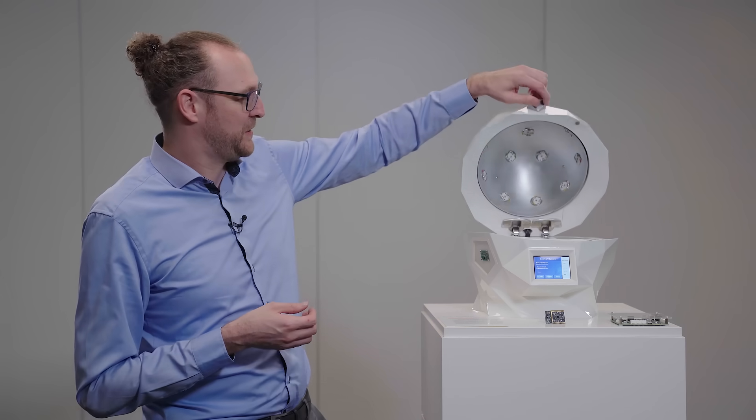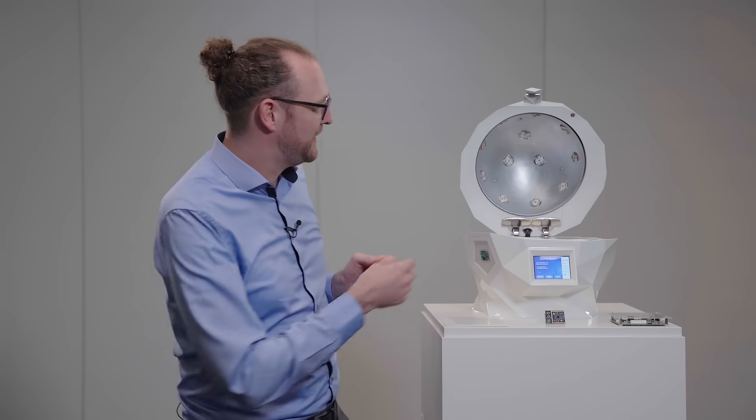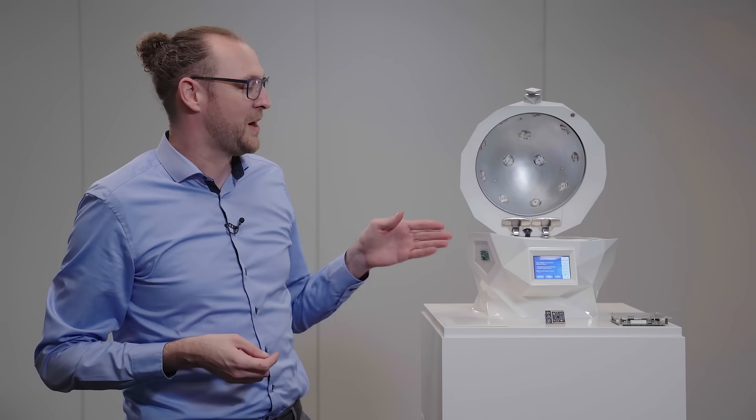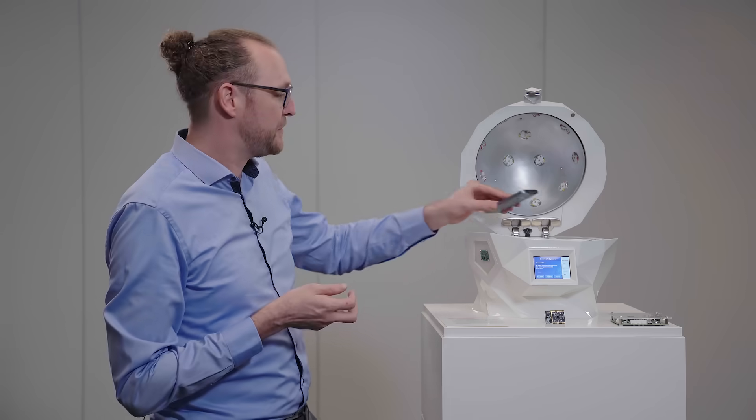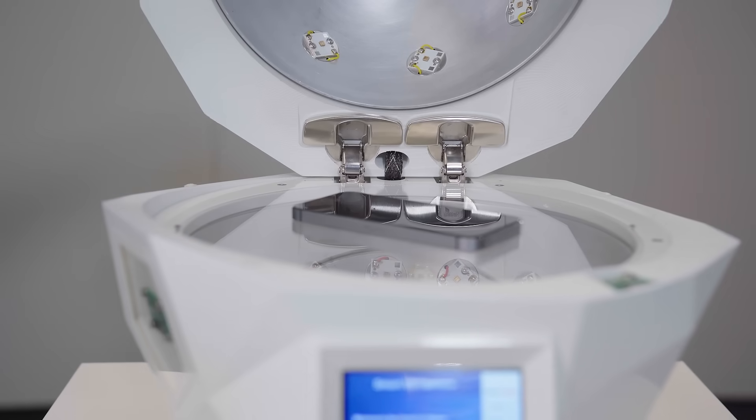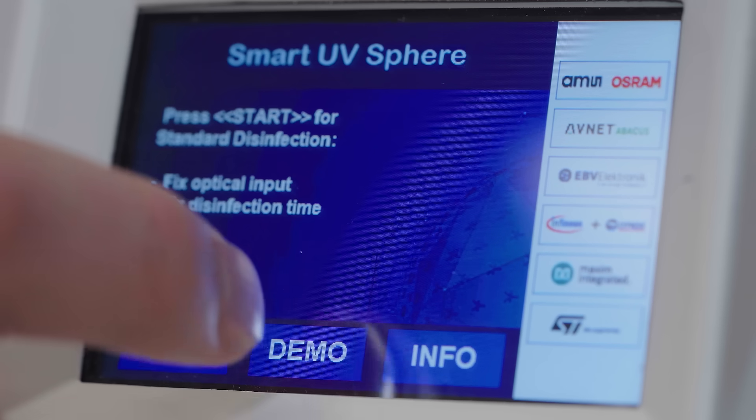In this demonstrator we have a lot of UV LEDs that generate germicidal radiation to kill any kind of virus, bacteria, or other germs. As you can see here inside, the LEDs are mounted on the top and on the bottom. If you put something inside like a mobile phone, it is here in the center, and then you can close it. While it is running, I will talk a little bit about how it works.